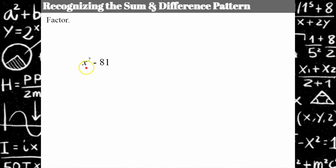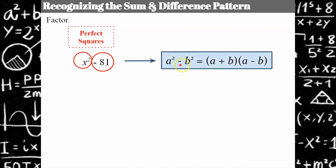To recognize this pattern, we're again looking for the first and last terms to be perfect squares — but now we only have two terms. So if you have two terms and both are perfect squares, we have the sum and difference pattern. For x² − 81, the perfect squares are x and 9. We need a positive 9 and a negative 9; so 9x and −9x form a zero pair, giving us the a² − b² pattern.